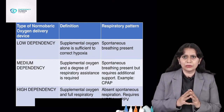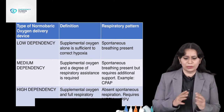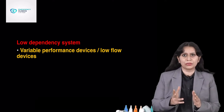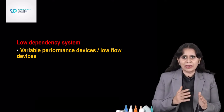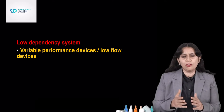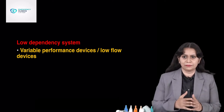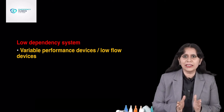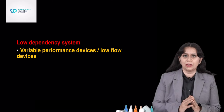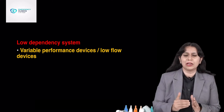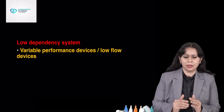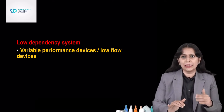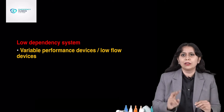In this video, I will discuss the low dependency devices. Low dependency devices are also divided into two types: variable flow or low flow devices, and fixed flow or high flow devices. How do I choose the devices? It strictly depends upon the ventilation pattern of the patient — how the patient is breathing. What do I mean by variable performance, low flow device? Two important things.